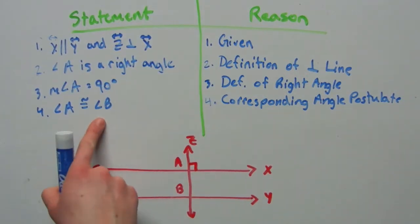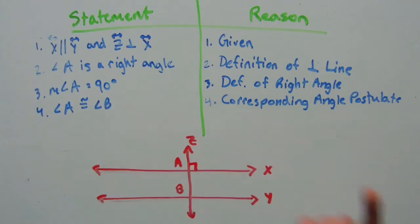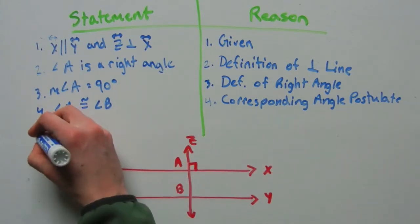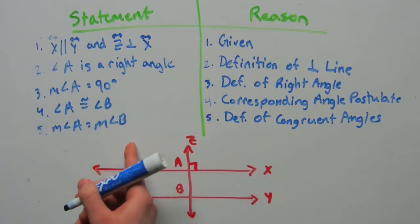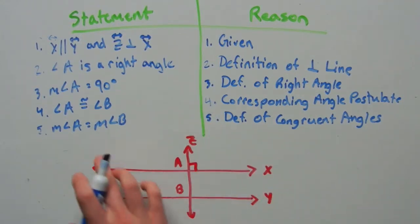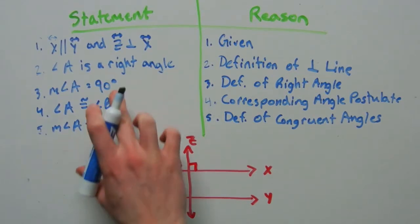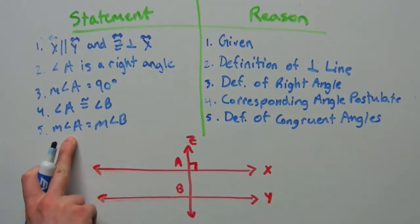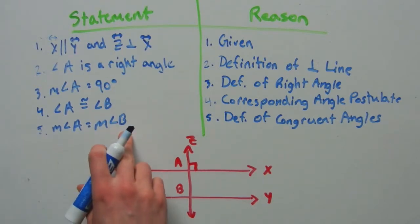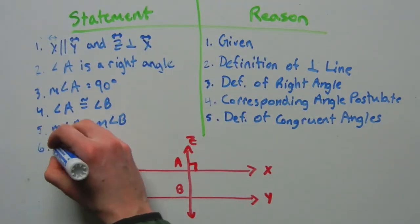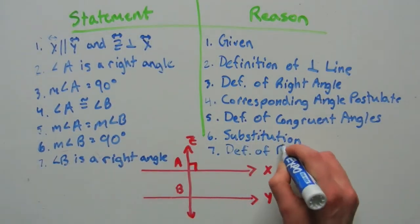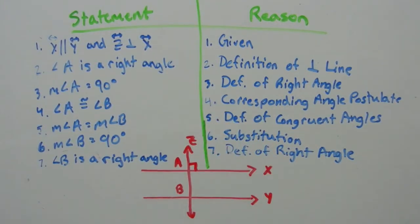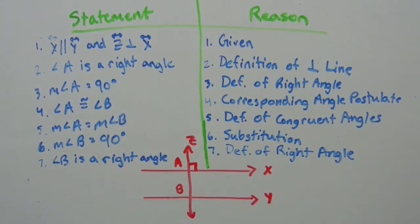If we have that two angles are congruent, then we know that the measure of those two angles are equivalent — that's by the definition of congruent angles. Now we can use substitution and substitute 90 degrees in for the measure of angle A, so we get that the measure of angle B is equal to 90 degrees. By the definition of a right angle, we can say that angle B is a right angle, since it was equal to 90 degrees.